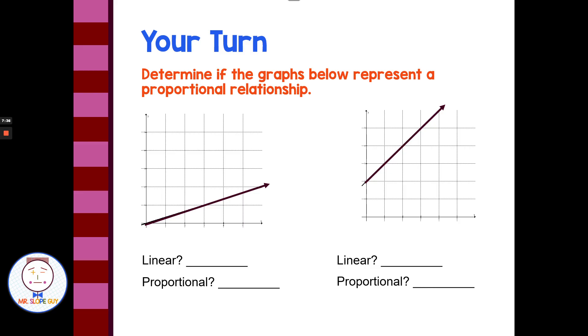Determine if the graphs below represent a proportional relationship, and also describe are they linear or non-linear. Let's look at this first graph. Is this linear? Does it make a single straight line? Yes, it makes a single straight line. Is it proportional? Yes. Is this one linear? Well, it makes a single straight line, so this one is linear. Is it proportional? No. What makes this one proportional and makes this one not proportional? It has to do with going through the origin. This one goes through 0, 0 at the origin here. This one has a y-intercept up here at positive 2. That would make it non-proportional because the line does not go through the origin.